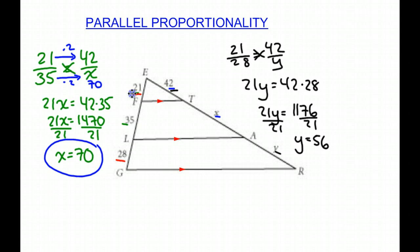And again, we could have used that scale factor times 2. 28 times 2 is 56, which is what we got. So our answer, X equals 70, Y equals 56.